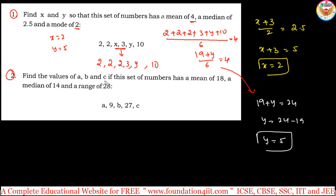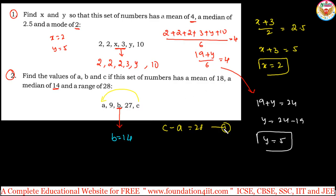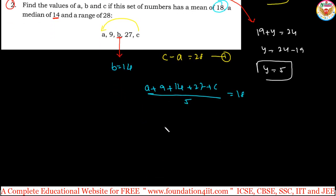Question 2: Find the values of a, b, c given that the mean is 18, median is 14, and range is 28. Since the numbers are in ascending order and the median is 14, b equals 14. For range: highest value minus least value, so c minus a equals 28. That is equation 1. For mean: a + 9 + 14 + 27 + c divided by 5 equals 18.